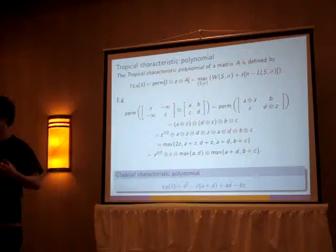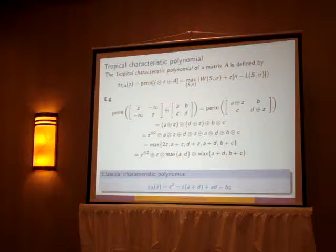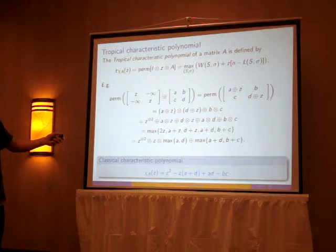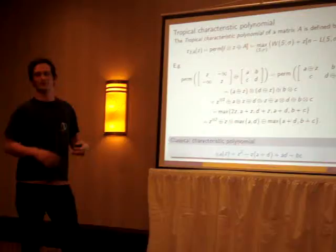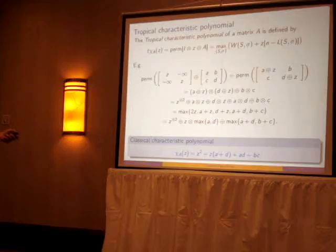And I'm claiming that if we work this matrix out and expand the permanent, what we'll end up with is an expression which can be written down like this. So it's the maximum over all of the poly-cycles, the weight of the poly-cycle plus z times n minus the length of the poly-cycle. So this is a piecewise affine function which is in some way coded in all of these poly-cycles.